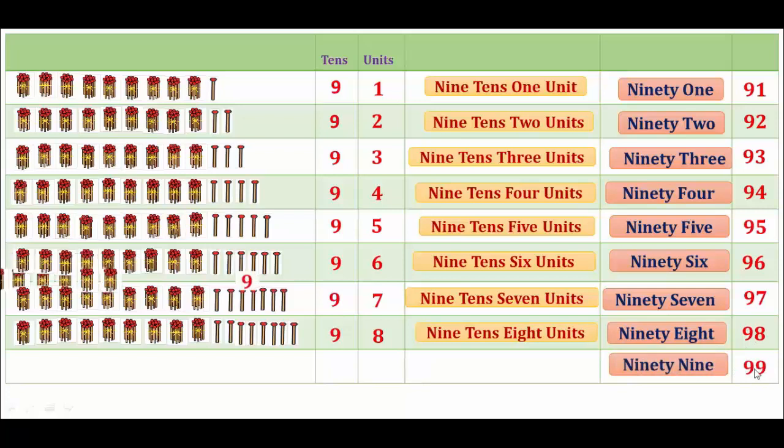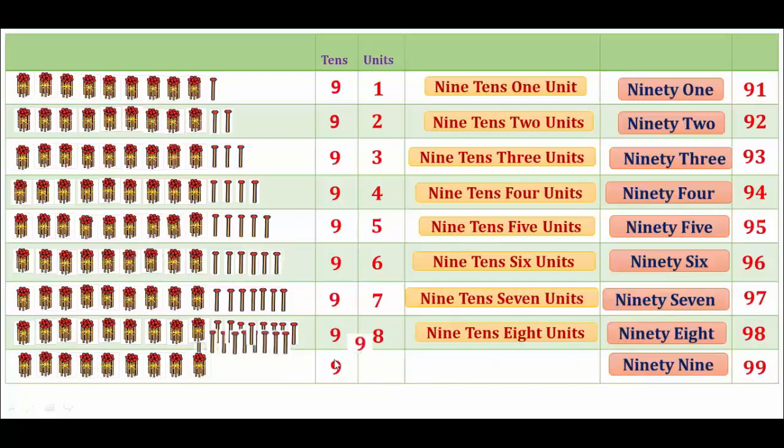Then 99. Here, 1, 2, 3, 4, 5, 6, 7, 8, 9 tens and 1, 2, 3, 4, 5, 6, 7, 8, 9 units. 9 tens and 9 units make 99.